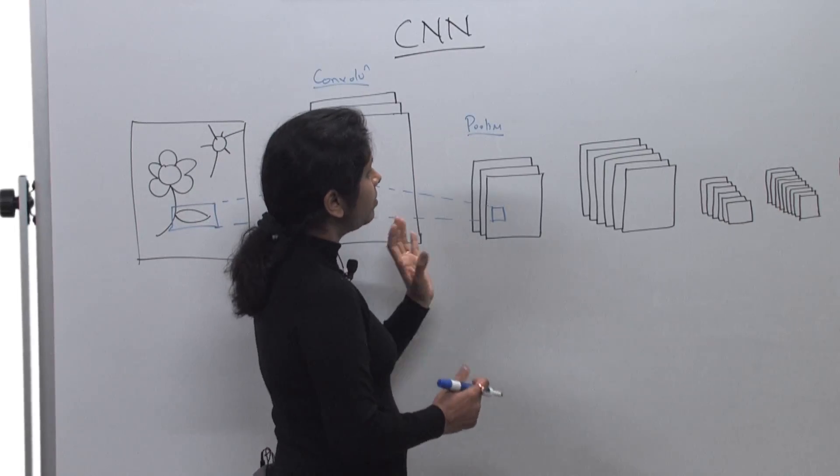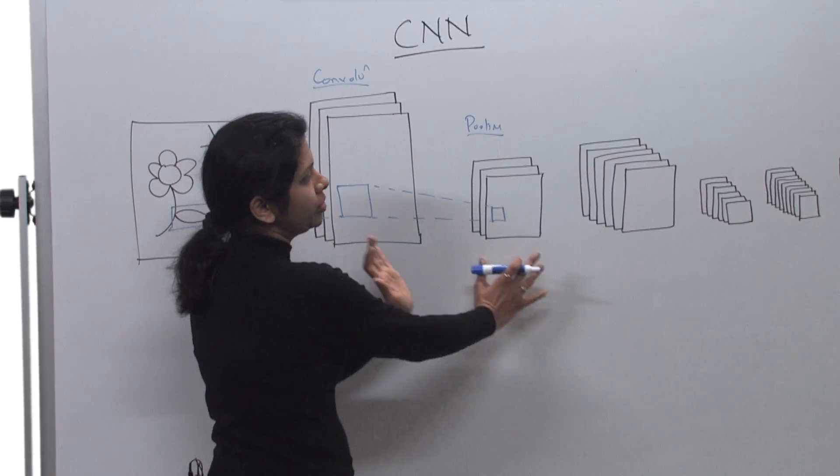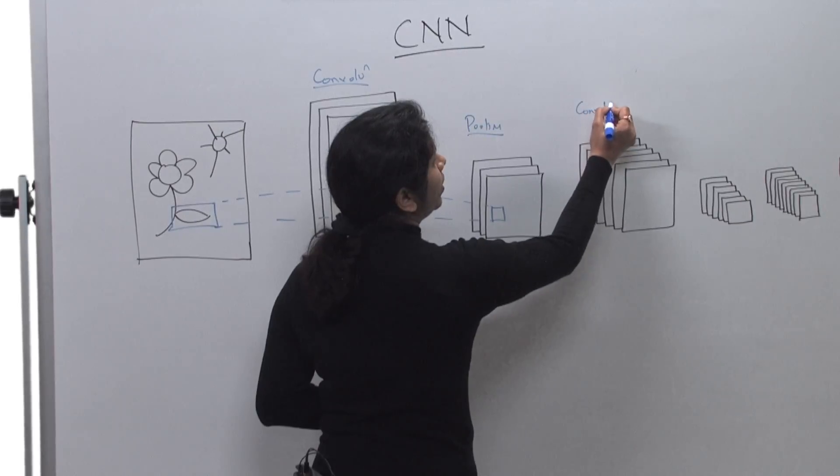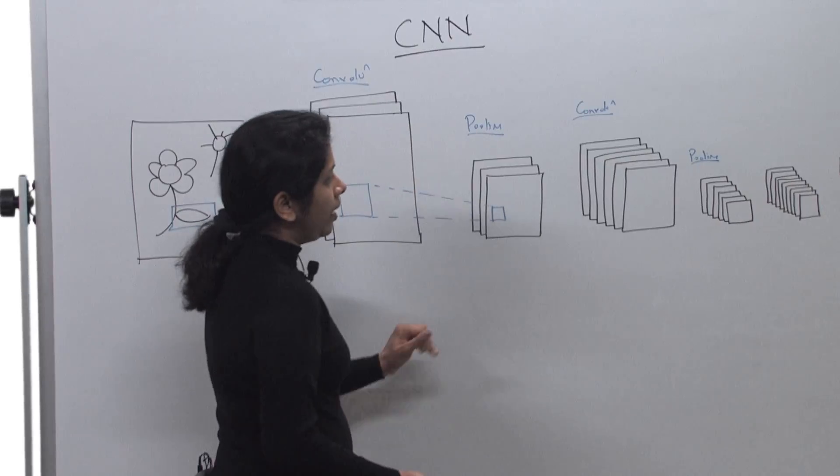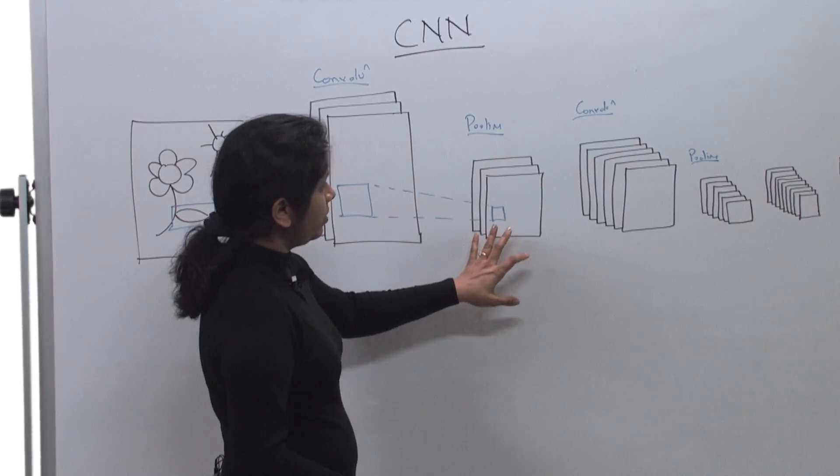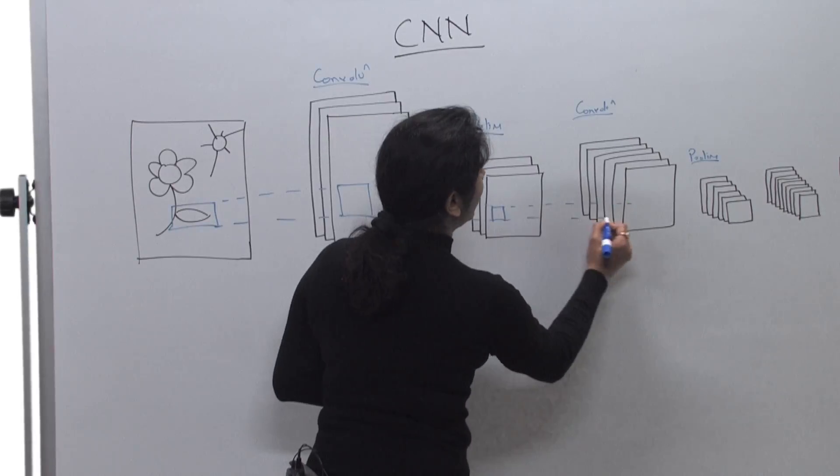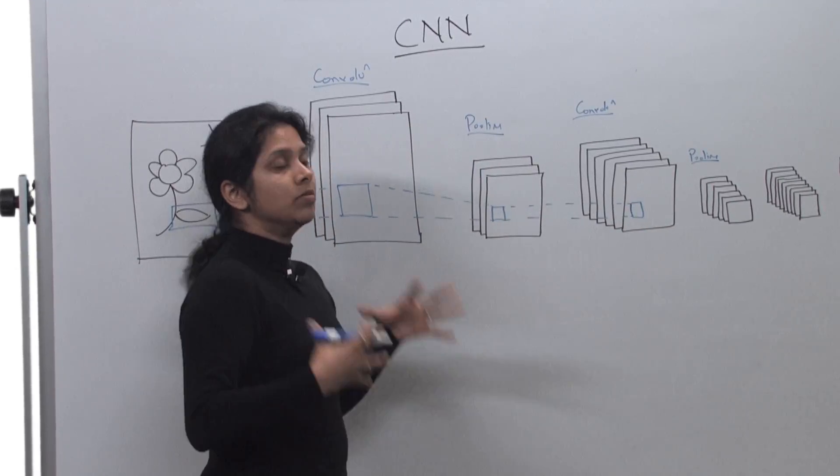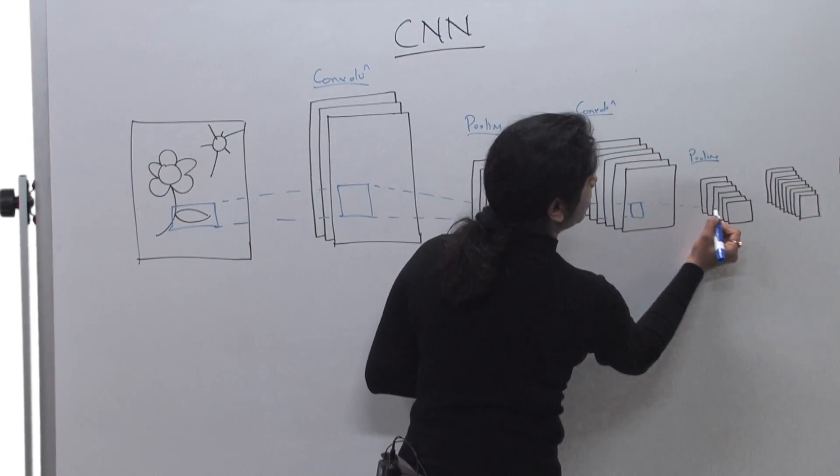And then similar process keeps going on about a continuation of convolution pooling, which is shown over here. So another layer of convolution, another layer of pooling. So this will again go through a bunch of activation filters in the convolution layer, get some more information from that image, and then again downsample it further.